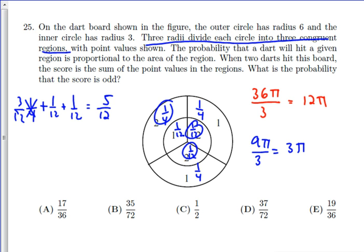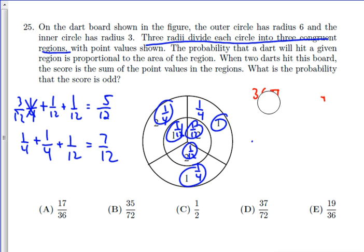So the probability of hitting an even is 5/12. The probability of hitting an odd is going to be the same thing, except that you've got two 1/4s for these two regions, and then one 1/12. And when you add that up, it turns out to be 7/12. So the probability of an even is 5/12. The probability of an odd is 7/12.